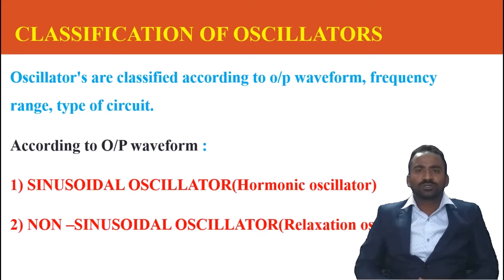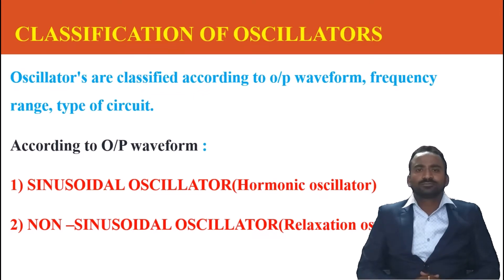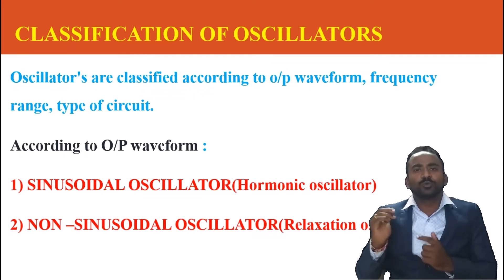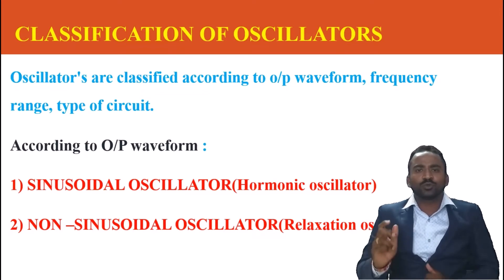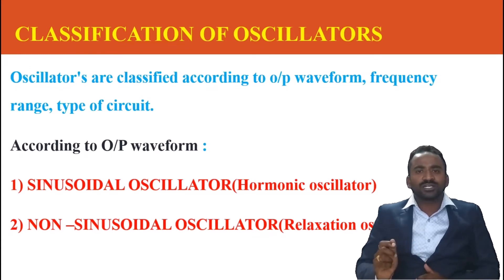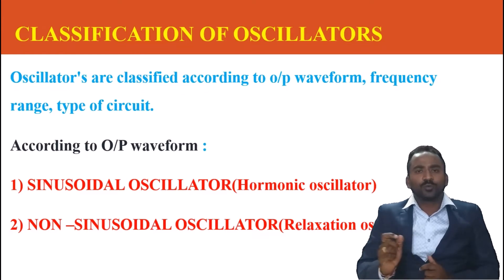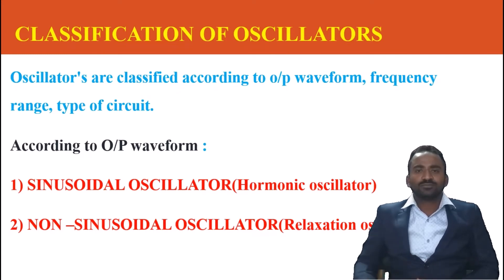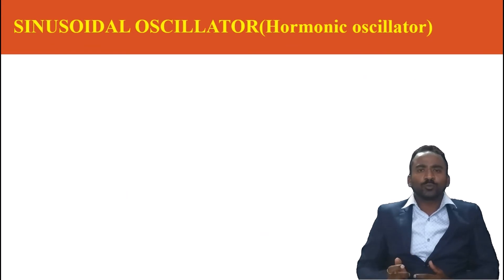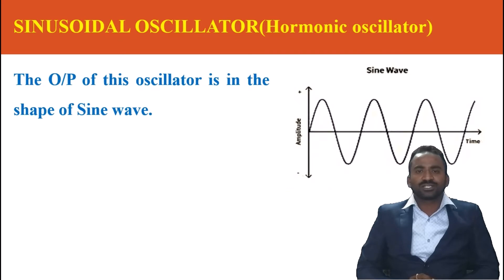Now let us look into classifications of oscillators. Oscillators are classified according to the output waveform, frequency range, and type of circuit. According to the output waveform — based on the shape of the output waveform — an oscillator is basically classified into two types: one is the sine wave oscillator, and the second one is the non-sinusoidal oscillator or relaxation oscillator. The other name of the sinusoidal oscillator is the harmonic oscillator. It is an electronic device whose output is in the shape of a sine wave.